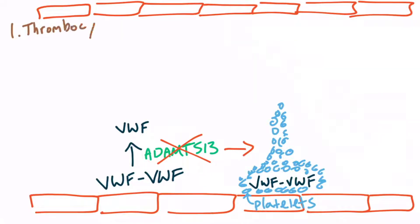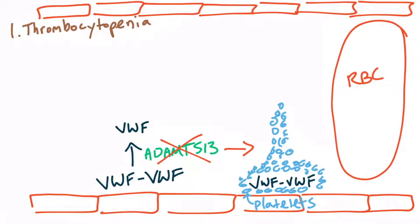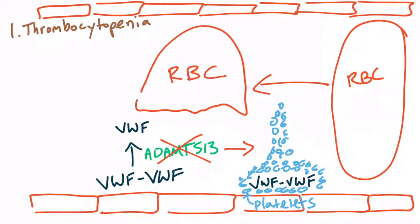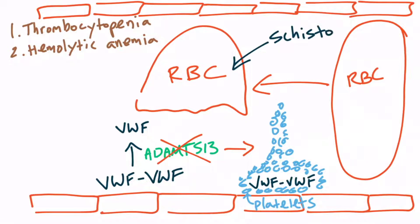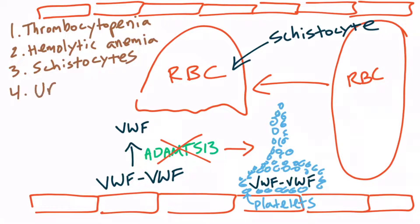The red blood cells that pass through these small blood vessels are partially lysed due to mechanical interaction with the thrombi. The lysis of red blood cells results in hemolysis and anemia — the second unique finding. The partial lysis also results in the formation of schistocytes, the third unique finding. Finally, because this condition predominantly occurs in the kidneys, it results in renal failure and uremia — the fourth and final unique finding of hemolytic uremic syndrome.